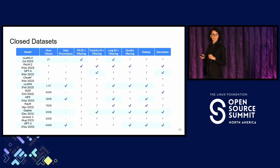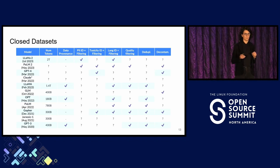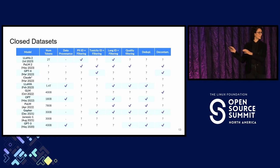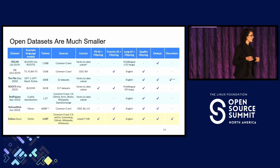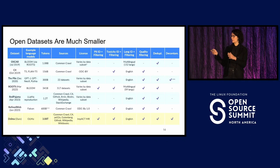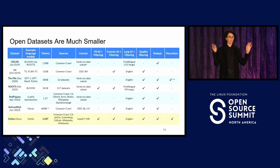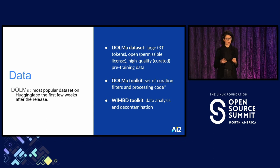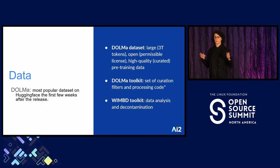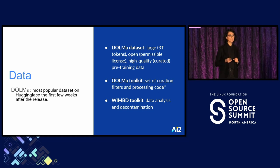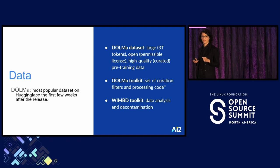Here is a table of some datasets being used to train proprietary models — there are a lot of question marks; we don't know how these data are curated. And this is the list of open datasets available for training. Compared to these, we argue that Dolma is of the highest quality and larger — it includes more tokens, and including more tokens improves the quality of our language models. To summarize, through this process we've released our dataset Dolma, a large dataset for training language models, a toolkit to curate this dataset, and a toolkit to analyze and qualitatively study what is going on in these datasets. The first few weeks after the release, Dolma was the most popular dataset on Hugging Face.